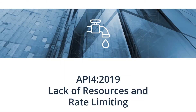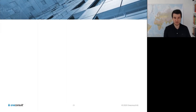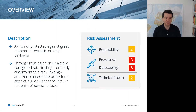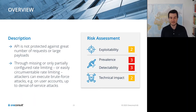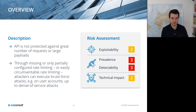Number four is lack of resources and rate limiting. If an API is not protected against a large number of requests or large payloads — either missing rate limiting or having rate limiting that is easily circumvented — attackers can execute brute force attacks on user accounts up to denial of service attacks.